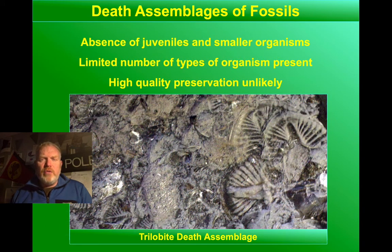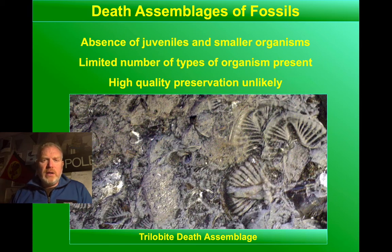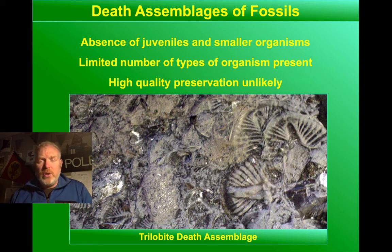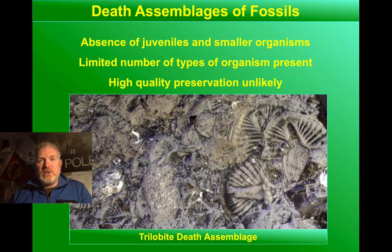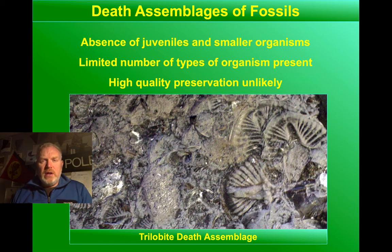We'd see perhaps a smaller range of organisms — we'd see juveniles missing. The smaller fossils may well be washed away. It may only be that fossils accumulate after death, so it's perhaps more likely to be mature organisms. There may be only a limited number of species of fossils actually preserved, and the fossils themselves may be a bit battered and broken — we're not going to see particularly fine detail preserved within a death assemblage.